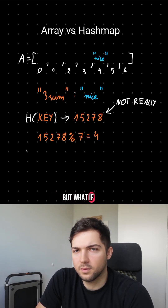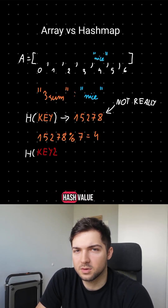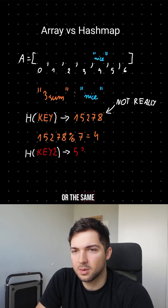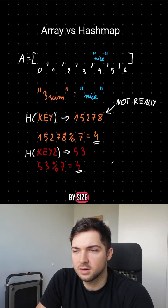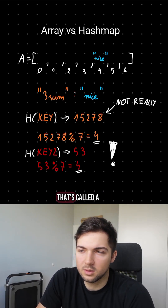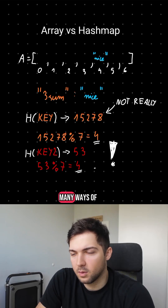But what if two keys have the same hash value, or the same remainder when divided by the size? That's called a hash collision, and there are many ways of dealing with it.